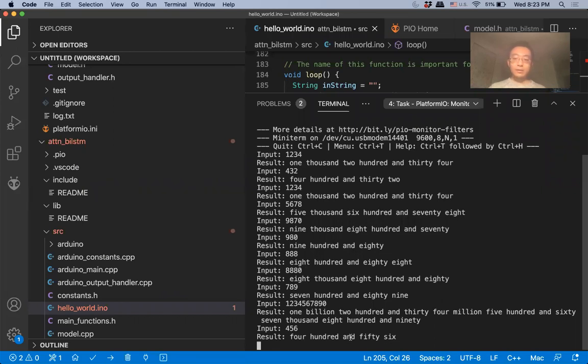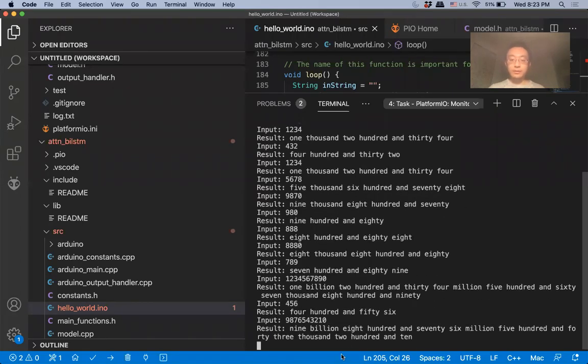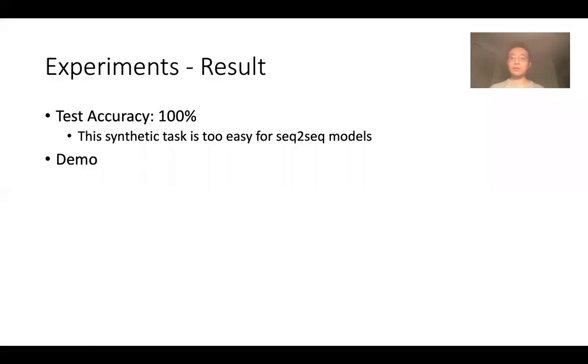Let's try 987654310. The output is nine million eight hundred seventy-six thousand five hundred forty-three thousand two hundred ten. Okay, so great, it works. It probably works because here we do not use any quantizations and test accuracy is 100%.